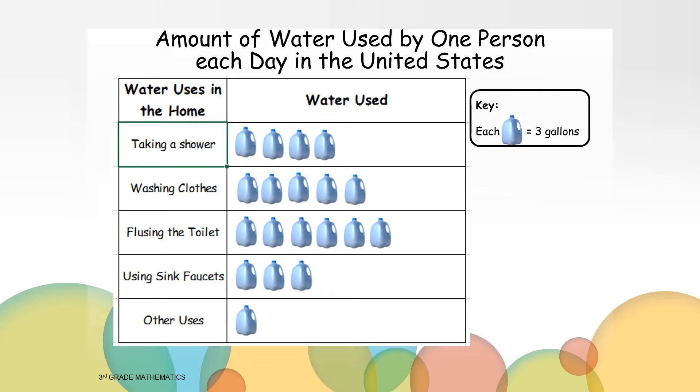Now we know about how much water is used by one person each day, doing these different things with the water. Now that our pictograph is complete, let's interpret the data. What are you noticing about the data?